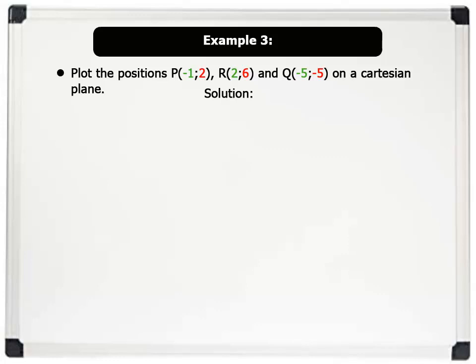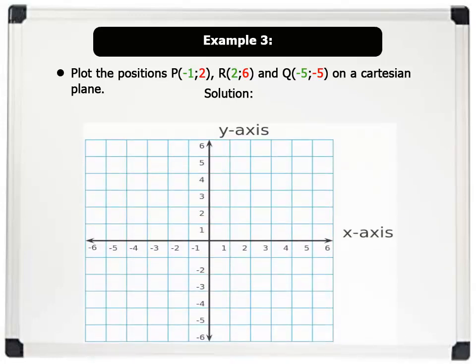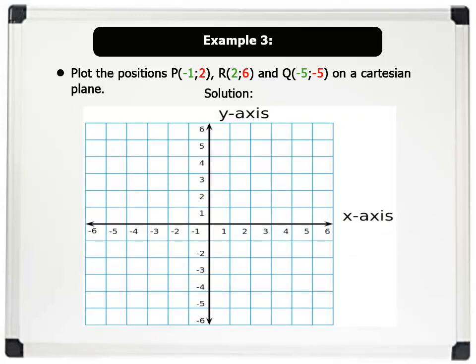First, we display our Cartesian plane, as shown on the board. Notice it has the x-axis and the y-axis. Now, to plot position P (minus 1, 2), we start from the origin, move left along the x-axis to minus 1. Then, we move up the y-axis to 2.